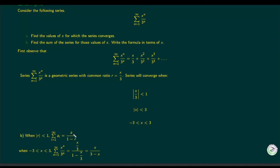For the sum, we use the formula a/(1 − r) where |r| < 1, valid for x between −3 and 3. The first term a is x/3 and r is also x/3. Plugging in: (x/3)/(1 − x/3). Simplifying by taking a common denominator and canceling, the final answer for the sum is x/(3 − x), valid for −3 < x < 3.